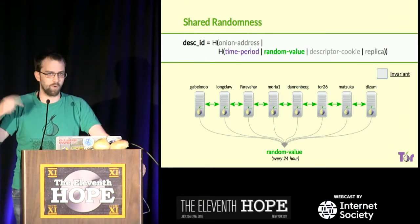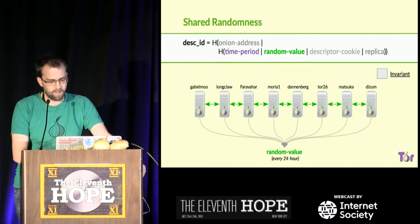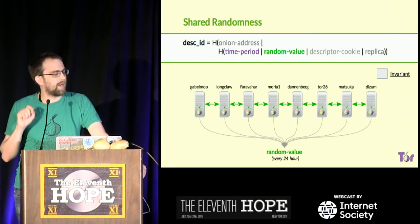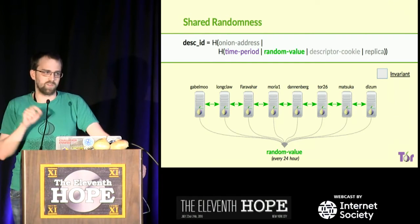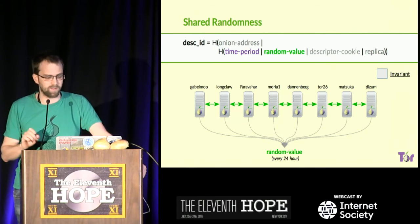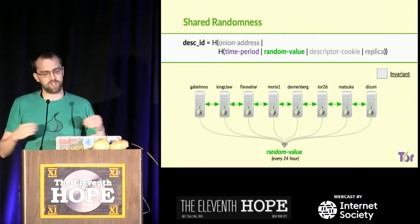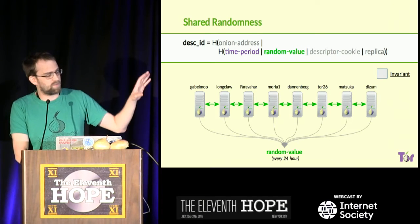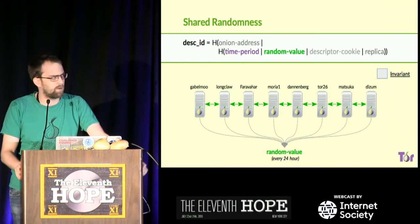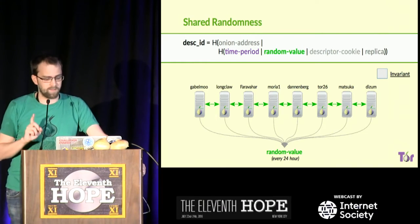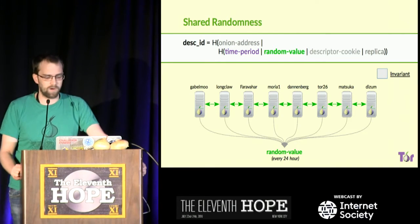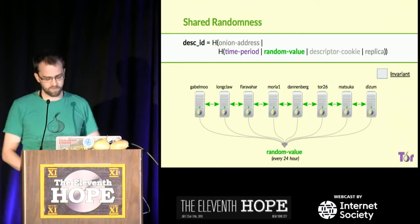If the descriptor ID changes every 24 hours and you rotate your key constantly, you can't camp. The other main change is key blinding: in the next-generation onion services, we use a key blinding trick so that HSDirs cannot learn the onion address. They cannot learn the onion address from the descriptor, but if they have the WikiLeaks onion address, they can hash it to get the descriptor ID — so they know this descriptor is WikiLeaks, but they cannot enumerate new onion addresses. Moria1 is running it, and in the next version, 0.2.9, stable around October, all directory authorities should run it, and Tor will create a shared random value every 24 hours, which other applications can also use.